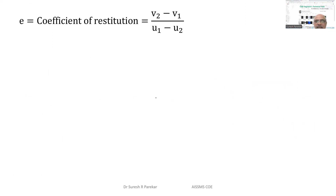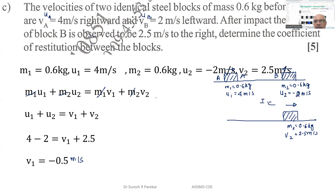After impact, block A moves to the left at 0.5 m/s and block B moves to the right at 2.5 m/s. The coefficient of restitution is 0.5.